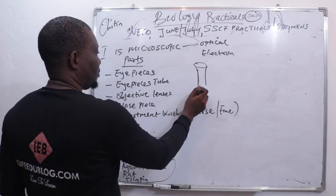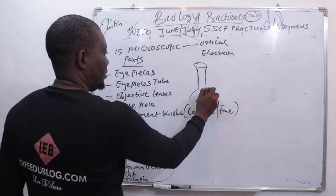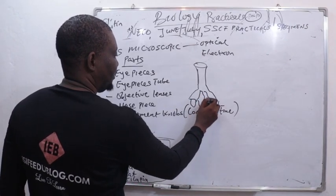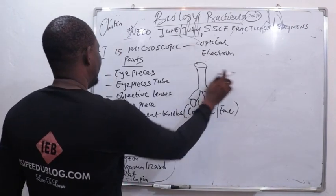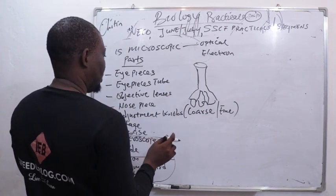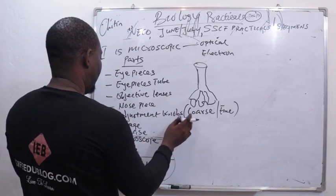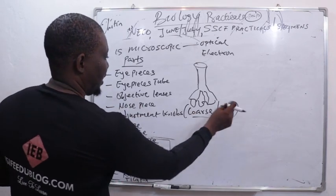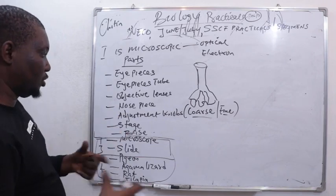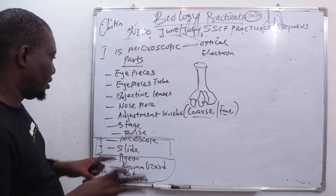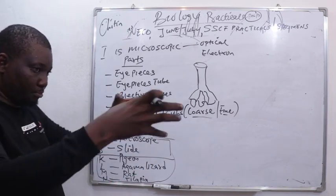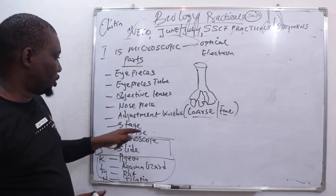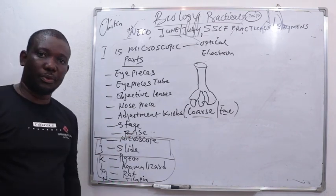Then you have some objective lenses here of different magnification. This is the tube. Then the nose piece and the adjustment knob. There are two: fine and coarse adjustment, to make adjustment of the specimen when you are bringing it close to magnify. Then the stage and then the base for standing.